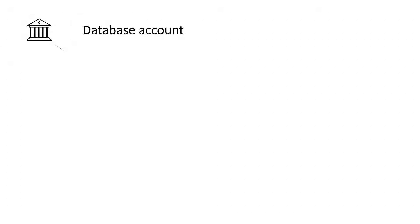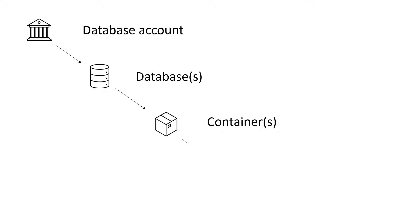An Azure Cosmos DB instance is made up of a hierarchy of resources. At the top we have our account. This has a unique name and here we manage things like account consistency, firewall rules and data replication.